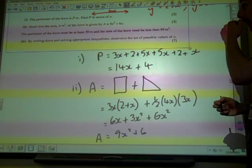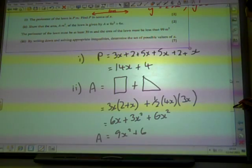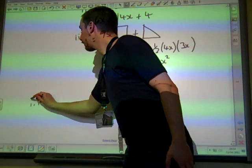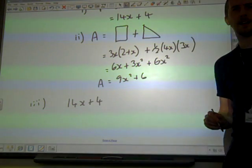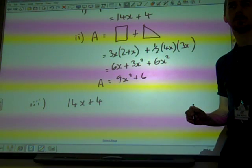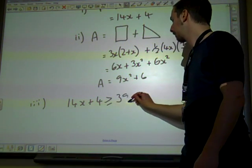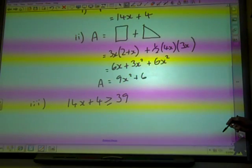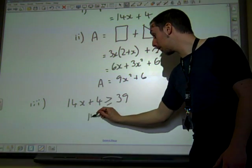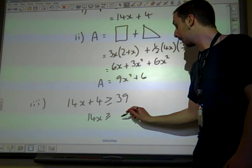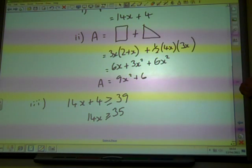Let's start with that perimeter one first. We're told the perimeter must be at least 39, so 14X plus 4. How are we going to write this then? At least 39. And then we should be able to solve this. This is just a linear inequality, so we work it. We take away 4 from both sides.